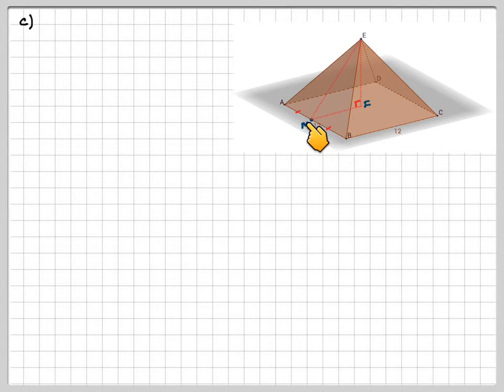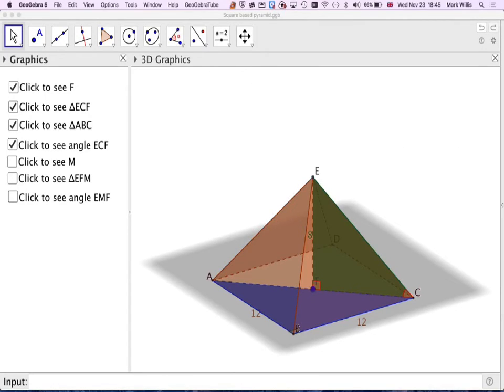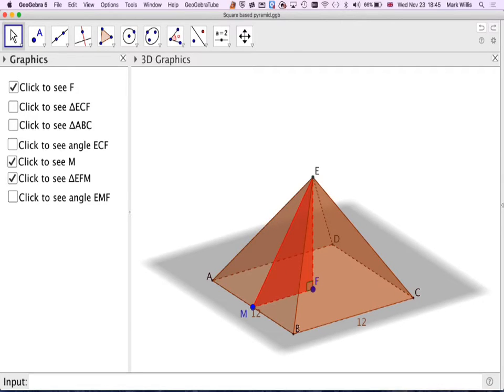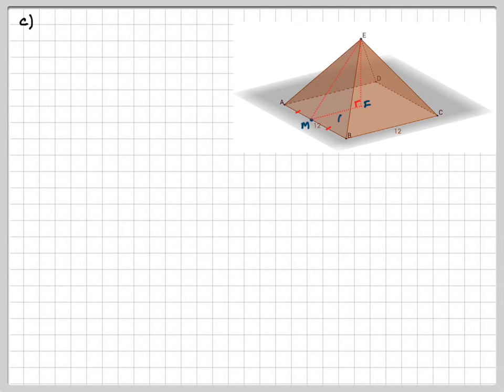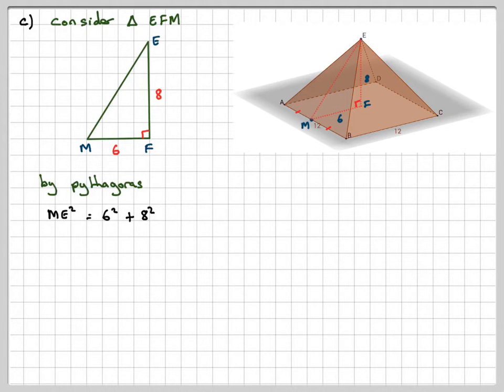It says M is the midpoint of AB, and I now have to calculate the length EM. So I'm just going back to my drawing now. I'm going to get rid of all these. I'm going to keep point F, though. That is point M. There is the triangle that I'm going to use. And eventually, I'm going to want to calculate that angle there. So consider the triangle EFM. So I know this distance here is 8. This is 6. And then applying Pythagoras theorem, it's going to be ME squared is equal to 6 squared plus 8 squared. So that's 36 plus 64, which is 100. And the square root of ME is going to be 10 centimeters. So this distance is 10 centimeters.